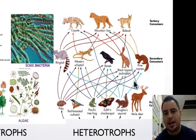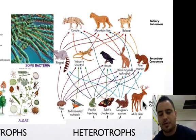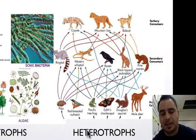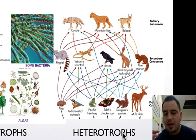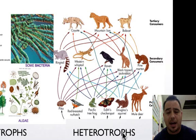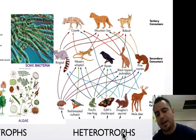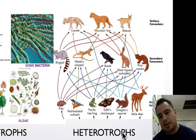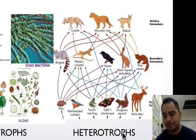Now let's look at heterotrophs. Heterotrophs are 'other feeders' — 'hetero' means other, 'troph' means feeder. They get their energy by eating others since they can't make it themselves. They're also called consumers because they consume others.